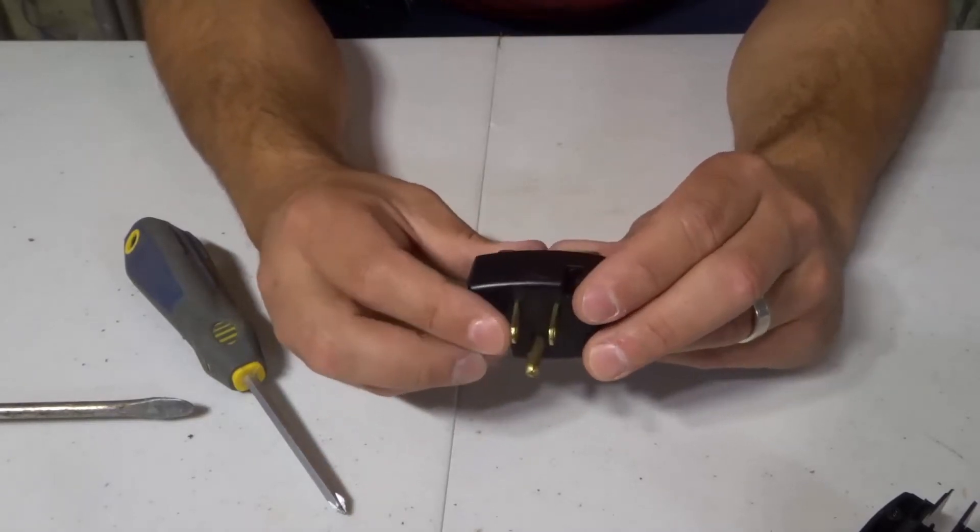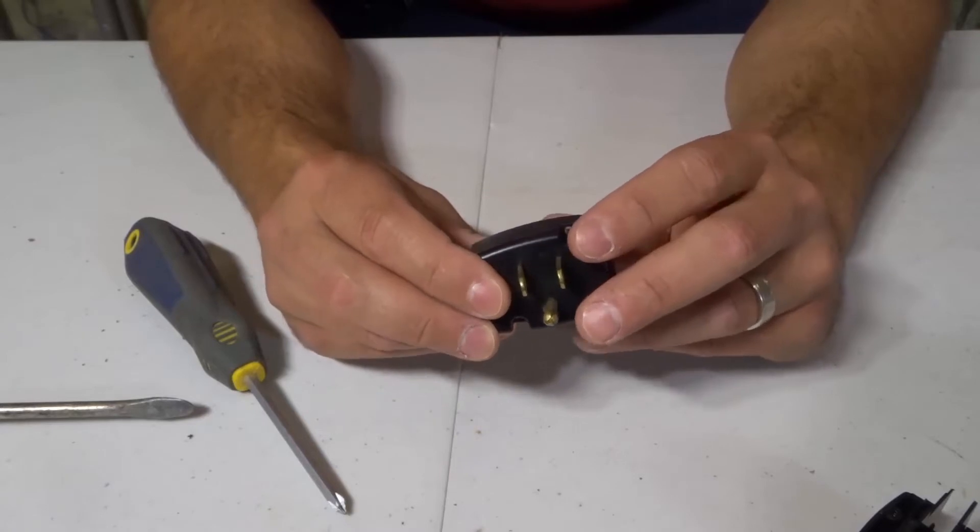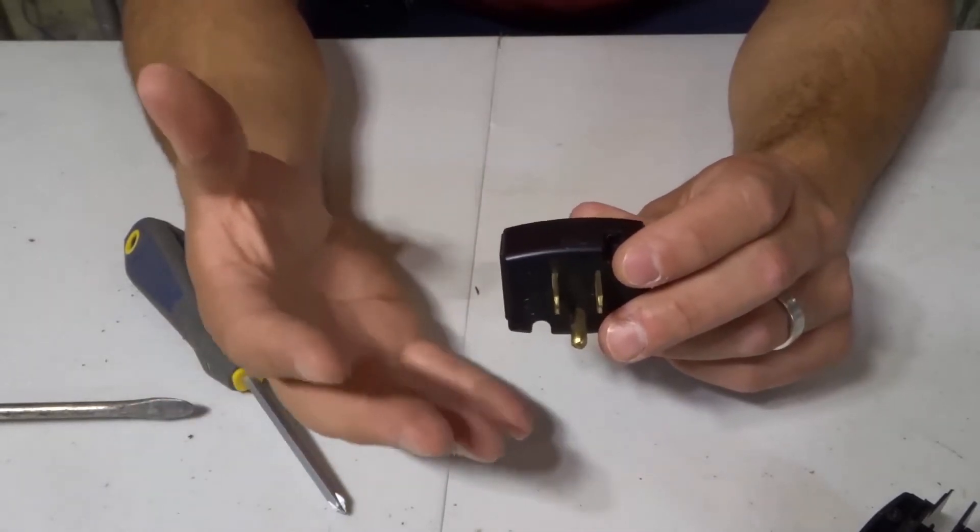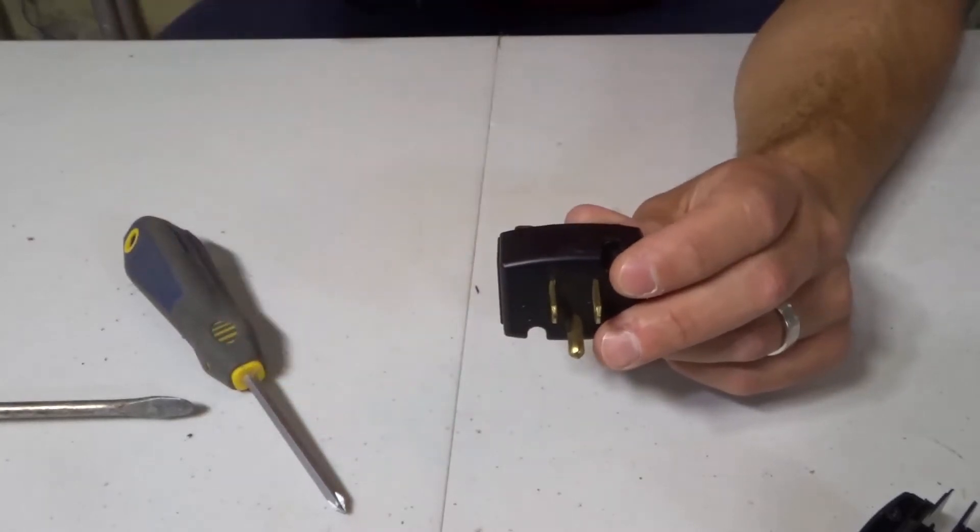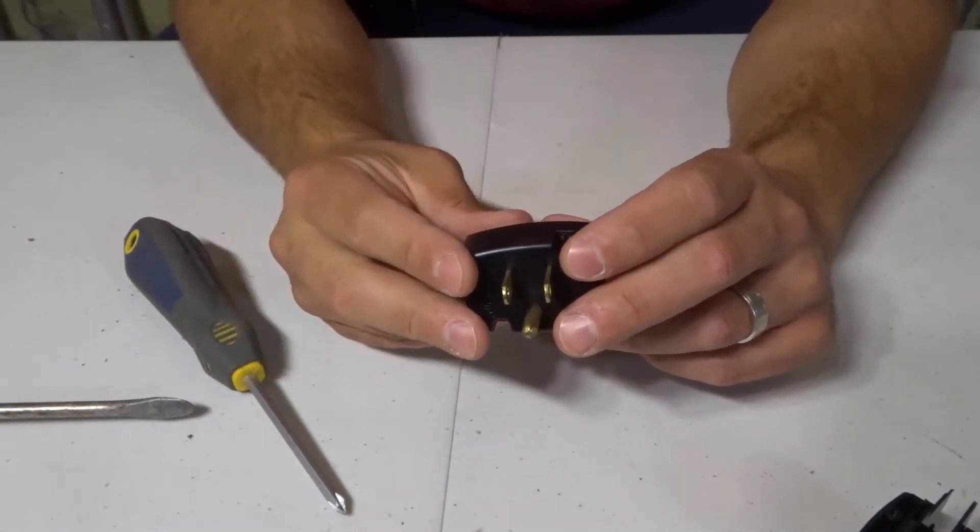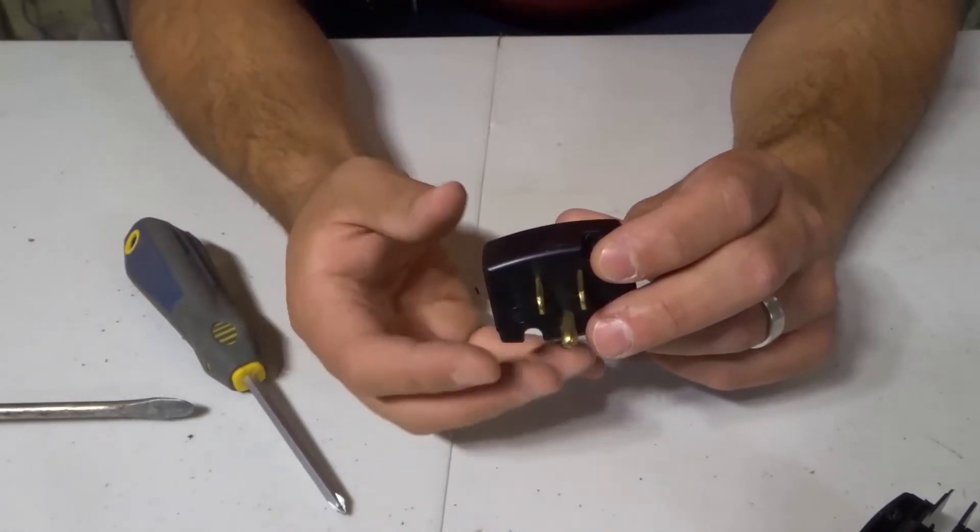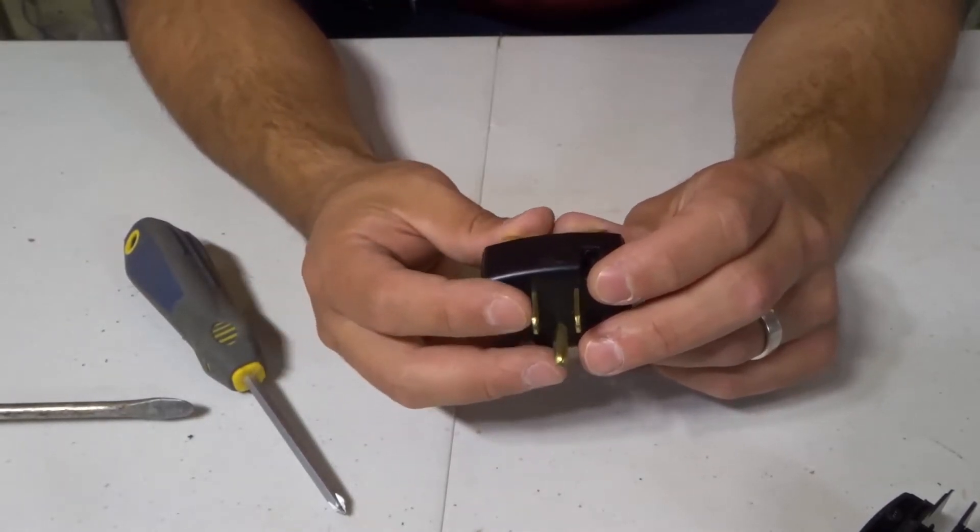So with your two prongs, one of them is going to be your hot prong, which generally speaking where I live is your hot wire, your black wire that is contained within the outlet, within the plug from the panel. That's going to provide power.